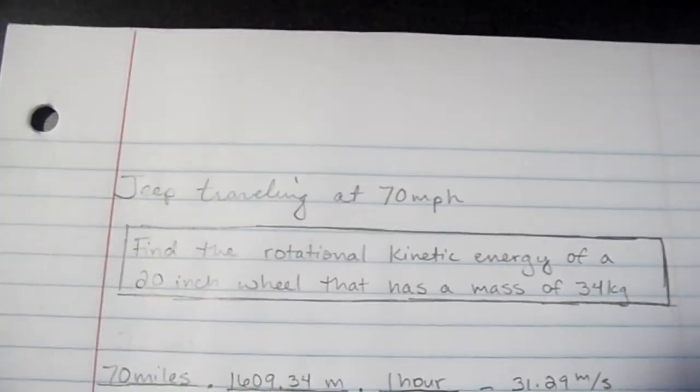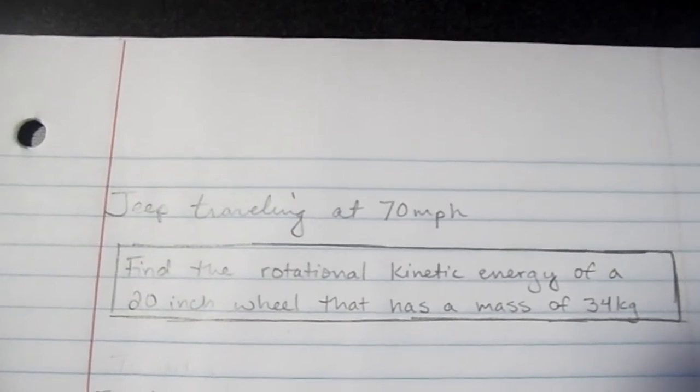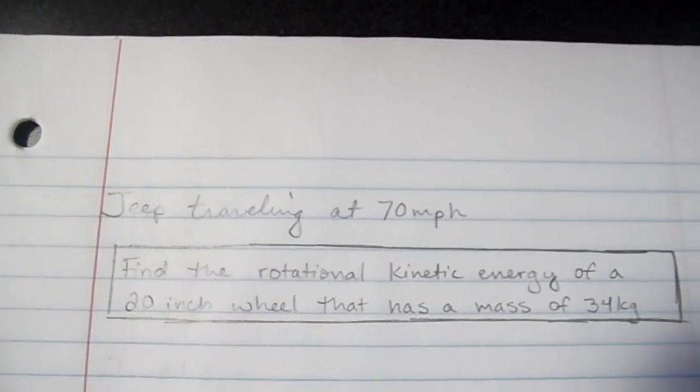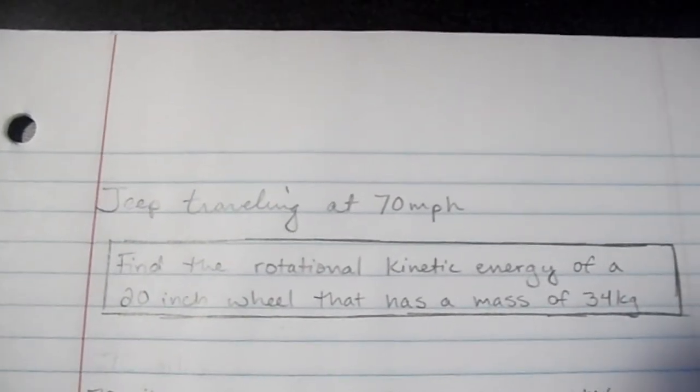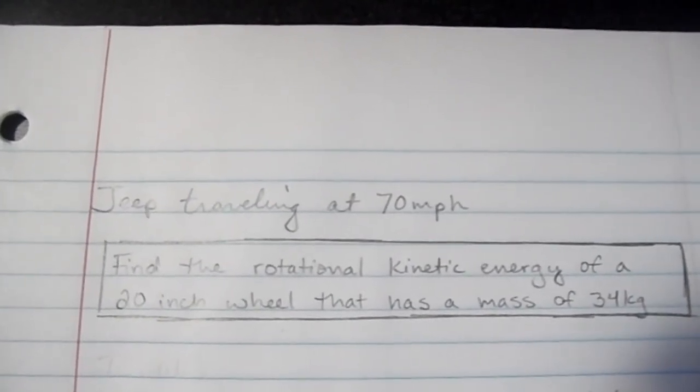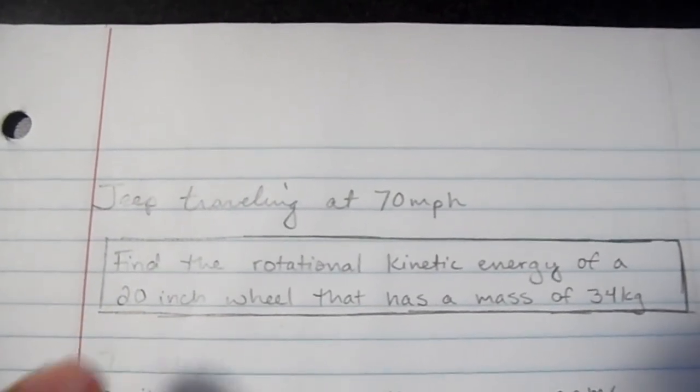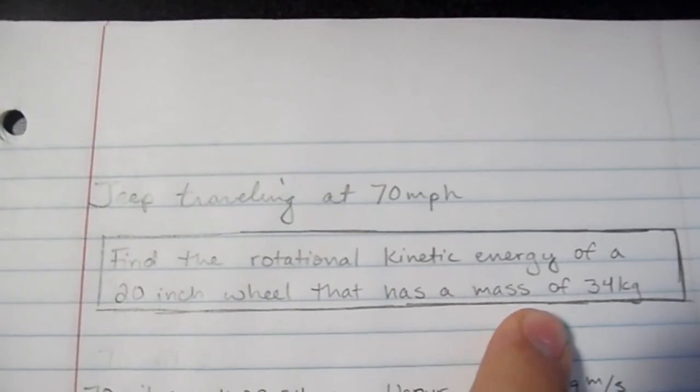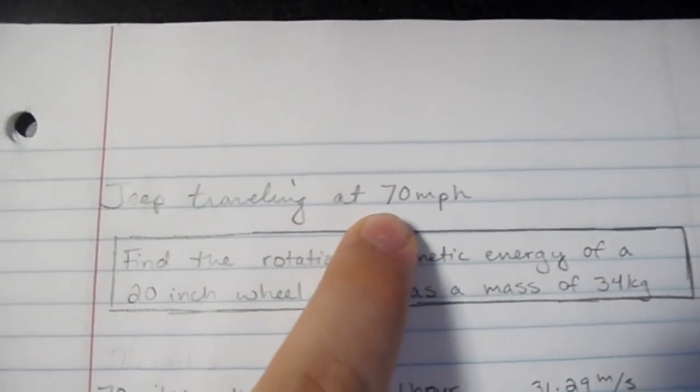Another really cool problem is we're going to find the rotational kinetic energy of a tire on a jeep traveling at 70 miles per hour down the highway. So here we have the directions for the problem. This wheel is going to be 20 inches in diameter and have a mass of 34 kilograms, and of course we're traveling at 70 miles per hour.